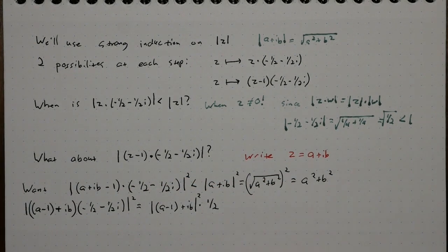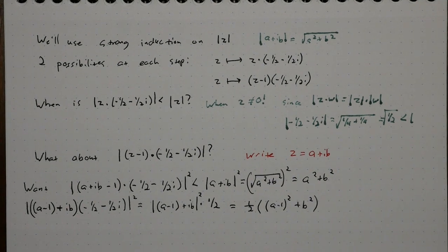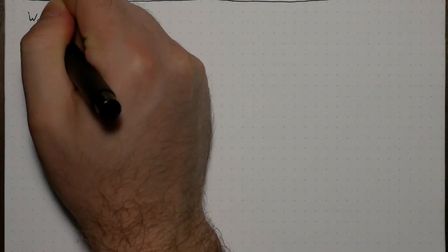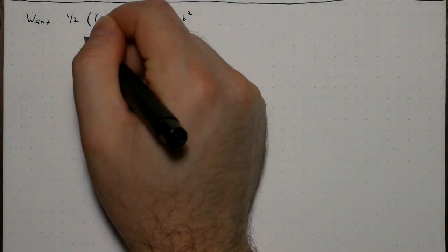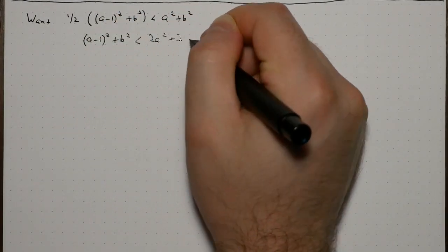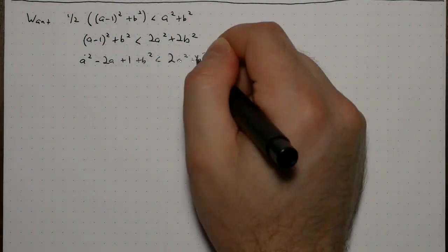Aha! What we need is for 1 half a minus 1 squared plus b squared to be less than a squared plus b squared. Multiply both sides by 2, cancel some stuff out, and complete the square. Now we're done.